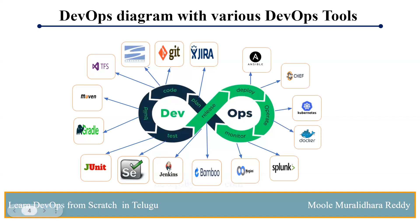Next is the configuration management tool — also called the operating and deployment tool. Options include Ansible, Chef, and Puppet. The most trending one is Ansible. Why Ansible? Ansible is agentless, meaning you don't need to install an agent on the destination server. You only install it on the source server, making it easy to manage 100 servers without touching each one. Then we have Docker and Kubernetes — Docker is the containerization tool, and Kubernetes is the container orchestration tool.